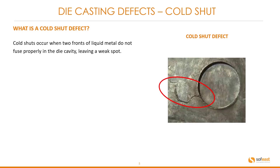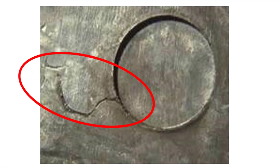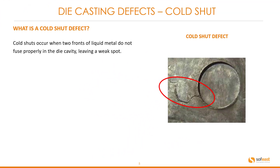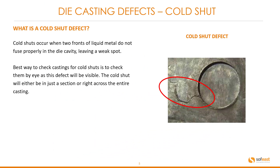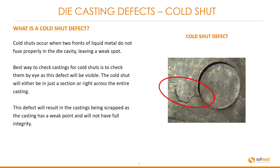Cold shot. What is a cold shot defect? Cold shots occur when two fronts of liquid metal do not fuse properly in the die cavity, leaving a weak spot. We can see an example in this picture here where the two liquid metal fronts have met but not fused, leaving this obvious failure mode. The best way to check castings for cold shots is to check them by eye as this defect will be visible. The cold shot will either be in just a section or right across the entire casting. This defect will result in the castings being scrapped as the casting has a weak point and will not have full integrity.